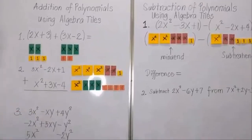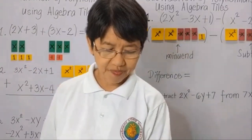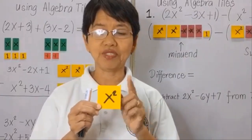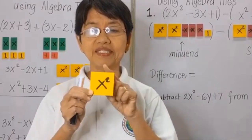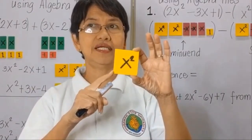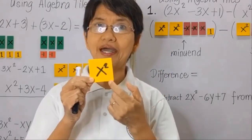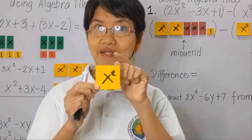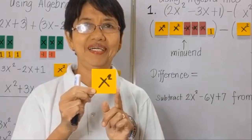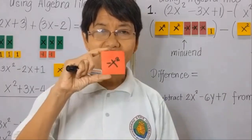So first let me introduce to you the algebra tiles that we have. I use color coding for these algebra tiles, which means that this tile which is x units in length and x units in width is equal to x squared. x times x is equal to x squared. And then the negative of x squared is a red tile.